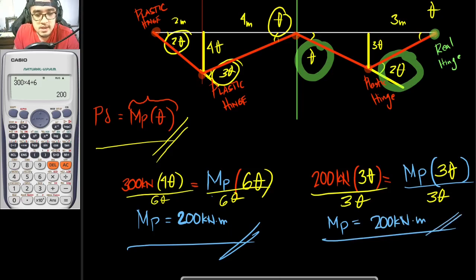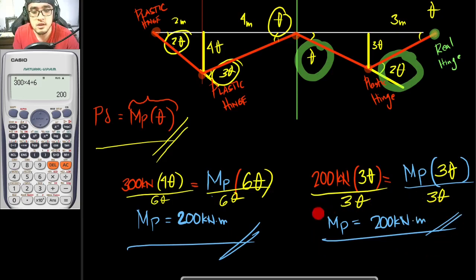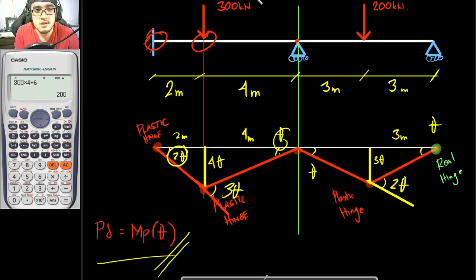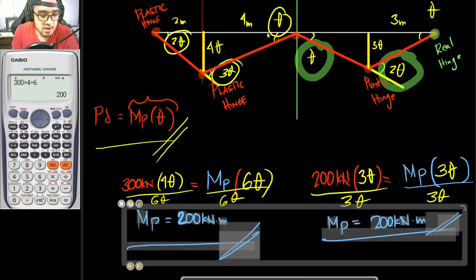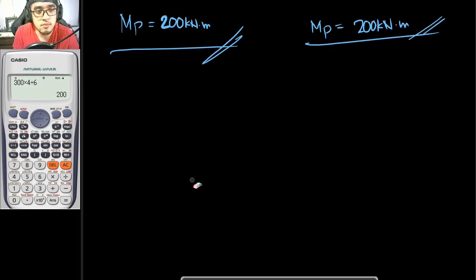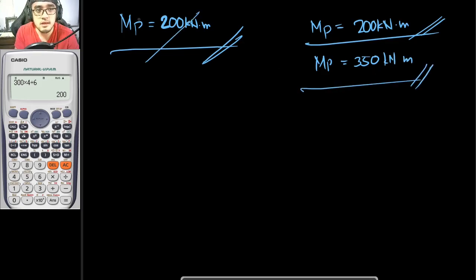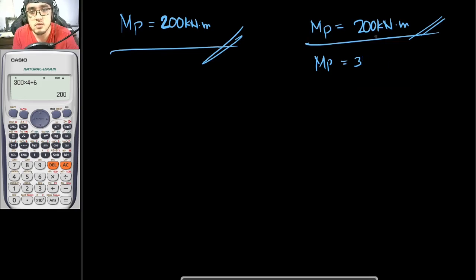Both spans give the same result. But for example, if one span gave MP equal to 300 kilonewton meter, that would be the governing one — the larger value governs and is used for design. Since both are the same here, our MP is equal to 200 kilonewton meter.